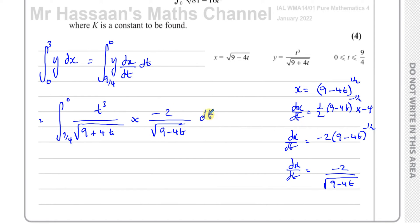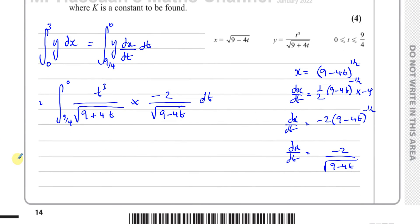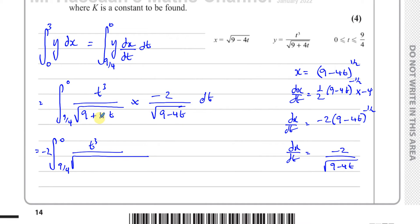We integrate all of that with respect to t. We have y times dx/dt: that's t³ over √(9 + 4t) times −2 over √(9 − 4t). Multiplying the square roots together is like √(9 + 4t) × √(9 − 4t) = √[(9 + 4t)(9 − 4t)], which is a difference of squares.